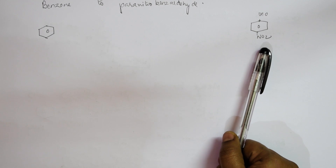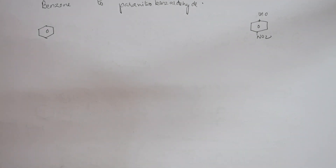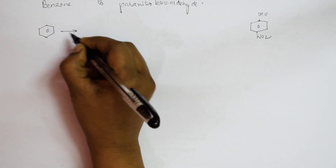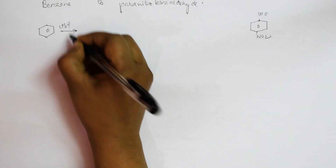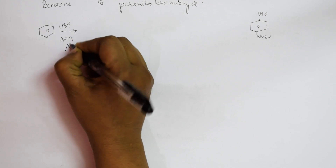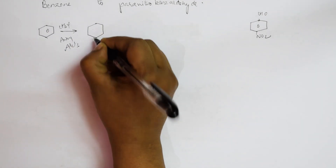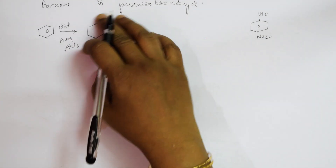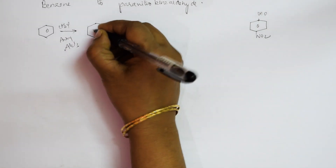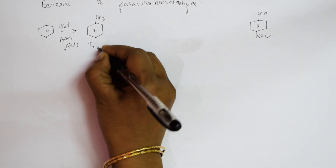To introduce the CHO group, first do alkylation — Friedel-Crafts alkylation with anhydrous AlCl3. Don't do nitration directly first; add the alkyl group first. Alkylation gives toluene (methyl group on benzene).